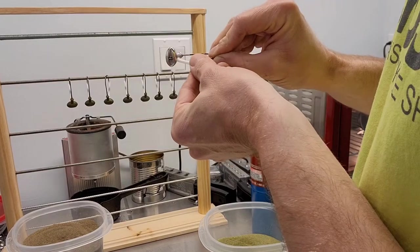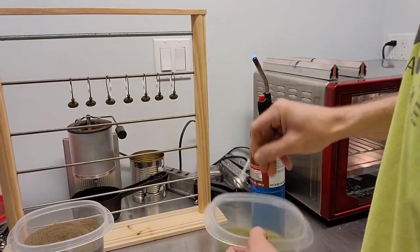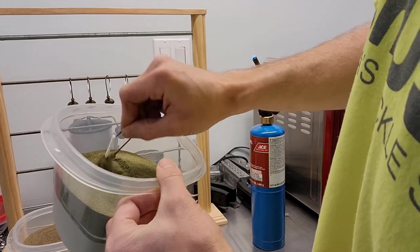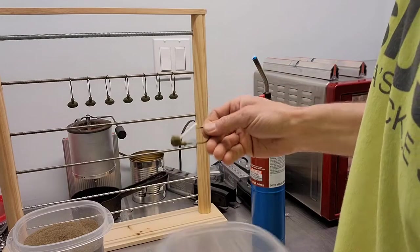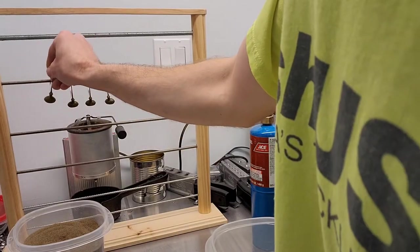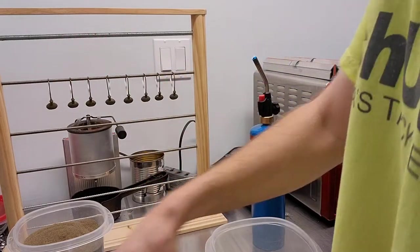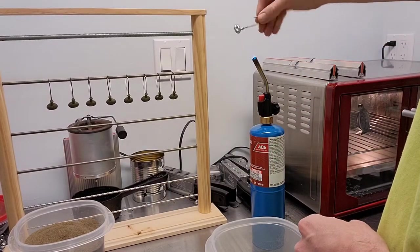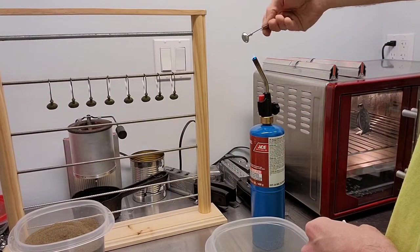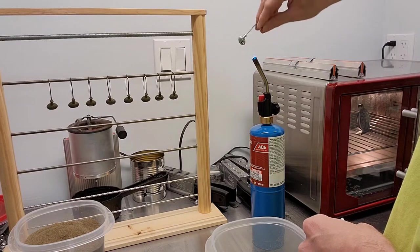I get these hot to the point where the lead starts to get kind of shiny, so you put quite a bit of heat into it. Then I put them up here to cool. I have the oven preheating to 400 degrees.